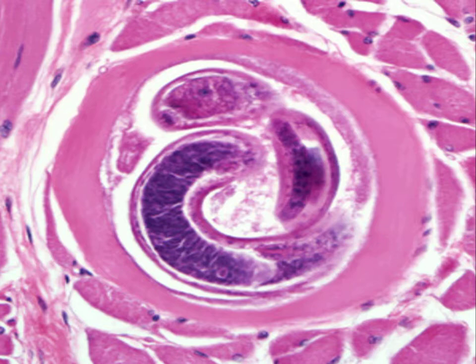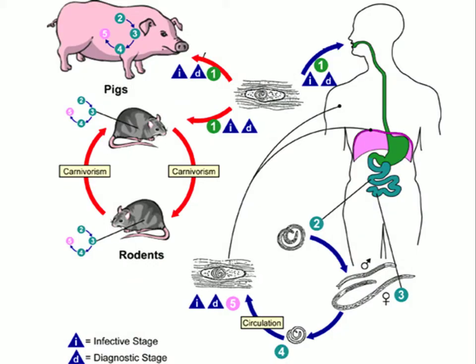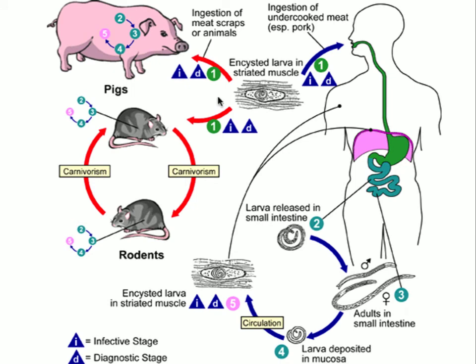Looking at the life cycle, it's complicated but cyclical. The kinds of animals that can harbor this include pigs — if a pig were to eat the muscle of another animal, like a rat or another pig, that had encysted larvae in the striated muscle, it would contract Trichinella. Similarly, if a rat ate the muscle of another rat that had it, they would contract Trichinella.